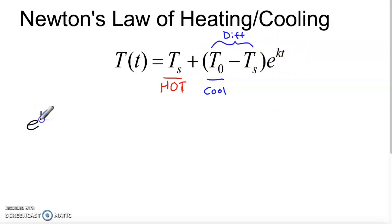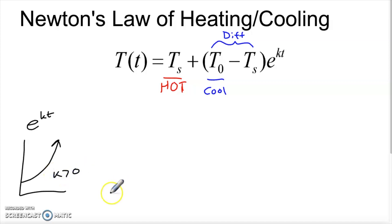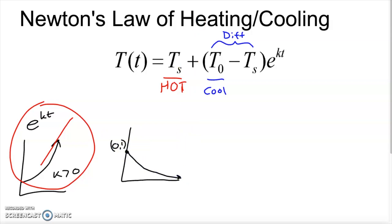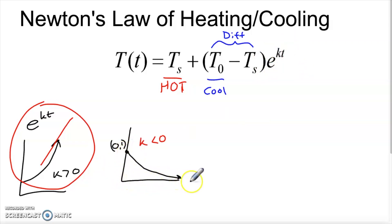That constant difference tells us something about what has to happen to the e^(kt) term. Normally you might imagine e^(kt) as a growing curve, but that's only true if k is greater than zero. Here, k is going to have to be negative. The graph we're looking at is one where e^(kt) starts at (0, 1) and decays. When k is less than zero, that's always a negative k. As time goes on, the e^(kt) term decays toward zero.